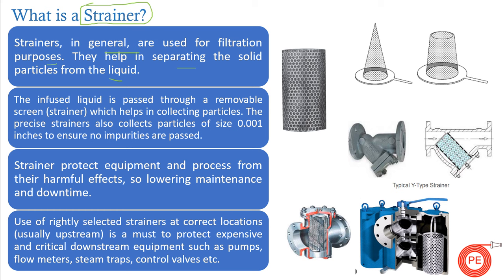The infused liquid is passed through a removable screen — this removable screen is basically what we call a strainer. This helps in capturing particles, which can be as small as 0.001 inches. Depending on the type of fluid moving through the screen, we have different mesh sizes. You can see in some pictures the holes are bigger, while in others they are very tiny — the mesh size is selected based on the solid particles present in the network.